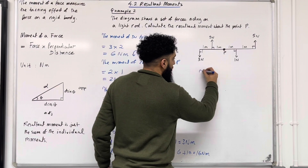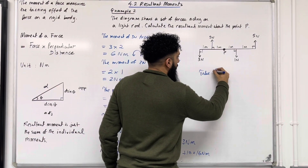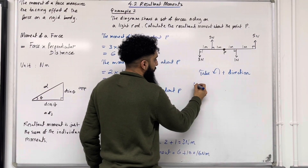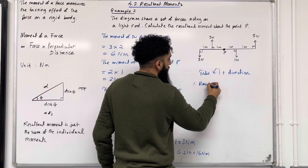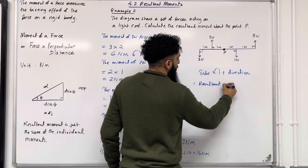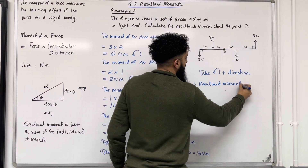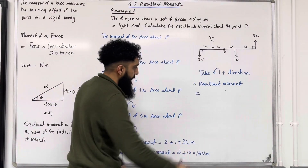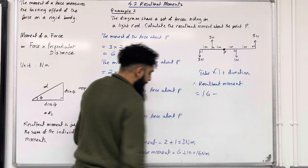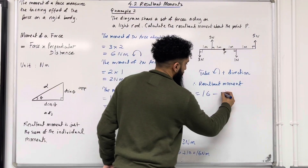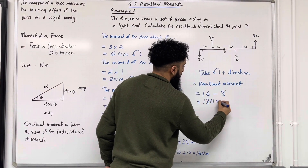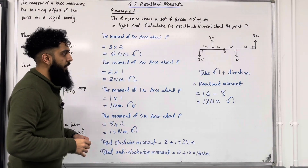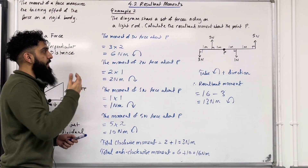So we're going to take anti-clockwise to be the positive direction. Therefore, the resultant moment equals 16 minus 3, which is 13 Newton meters, taking the body anti-clockwise. That completes Example 2.